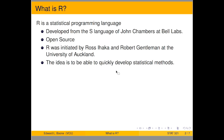What is R? R is a statistical programming language that was based off the S language, developed at Bell Labs by John Chambers. Ross Ahaka and Robert Gentleman at the University of Auckland wanted an alternative to S Plus, which was a commercially available statistical software at the time, so they created an open-source project to essentially recreate S Plus. The idea was to be able to quickly develop statistical tools and deploy them to the research community.